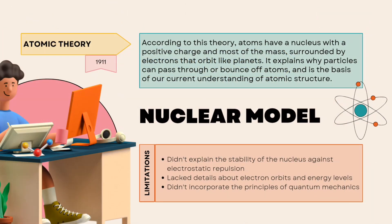According to the nuclear model, atoms have a nucleus with a positive charge and most of the mass, surrounded by electrons that orbit like planets. It explains why particles can pass through or bounce off atoms and is the basis of our current understanding of nuclear structure. Limitations include: it didn't explain the stability of the nucleus against electrostatic repulsion, lacked details about electron orbits and energy levels, and didn't incorporate the principles of quantum mechanics.